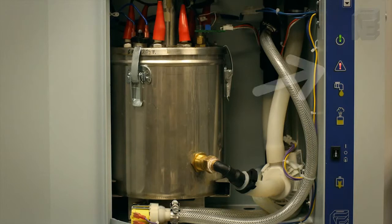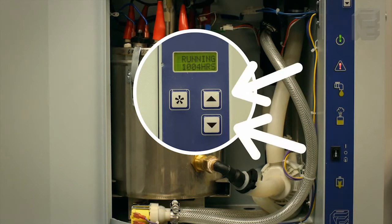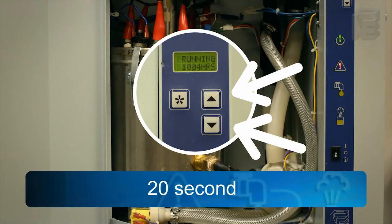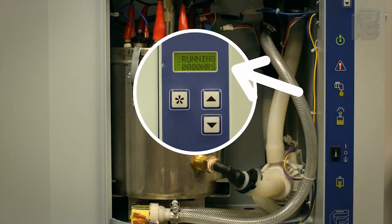In order to erase the red LED check light after servicing is complete, go to hours run in the menu and hold down the up and down arrows simultaneously for 20 seconds or until the hours are zeroed.